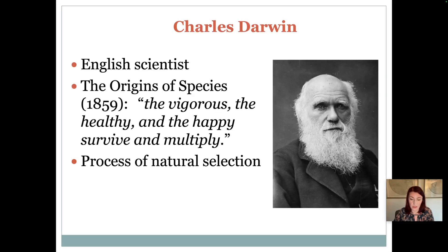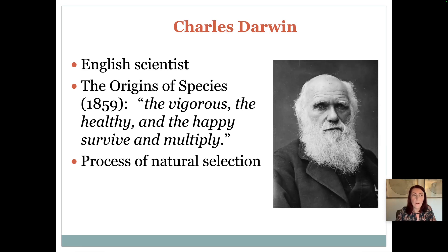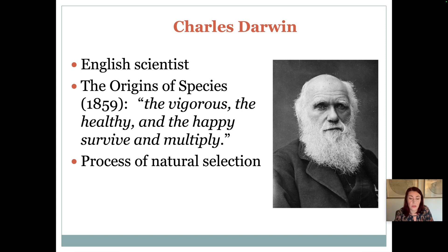Later scientists dubbed this the 'survival of the fittest' theory. Darwin wrote that the vigorous, the healthy, and the happy will survive and multiply — this is how species continue to evolve. Natural selection is essentially nature's way of filtering out the weaker organisms and ensuring only the stronger ones continue to live. Darwin stated this theory applies only to biological phenomena — plants and animals.